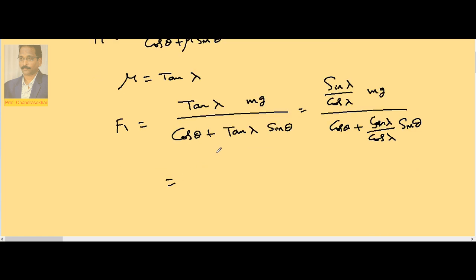If I combine, if I take LCM, it becomes Mg sin lambda divided by cos theta cos lambda plus sin theta sin lambda divided by cos lambda.